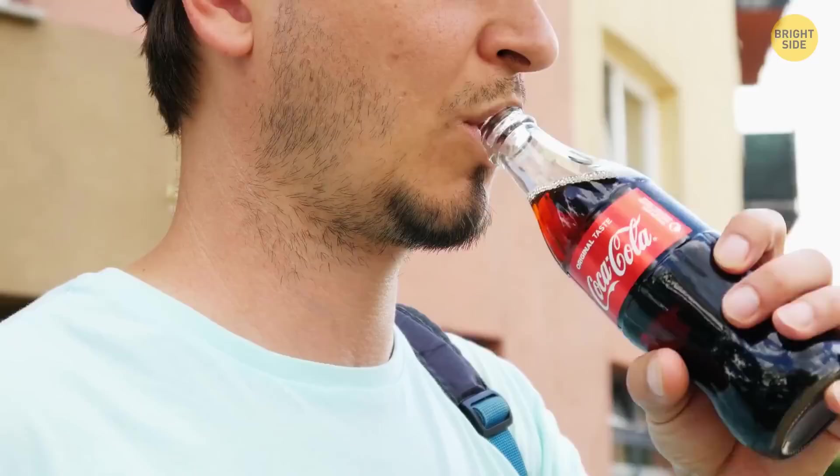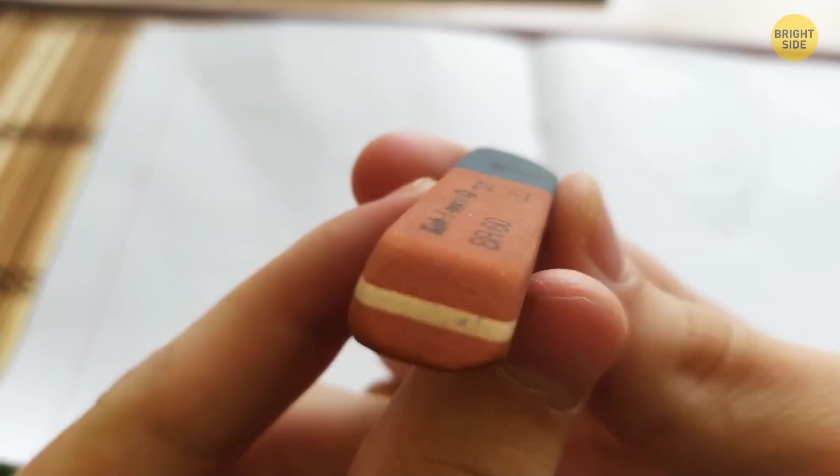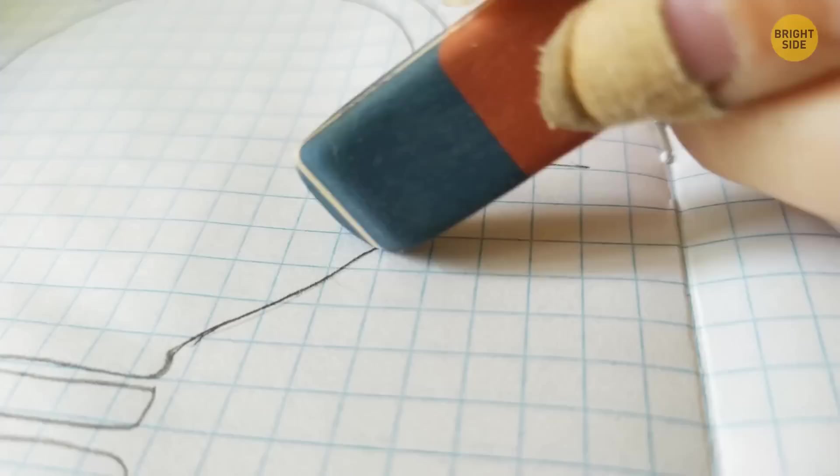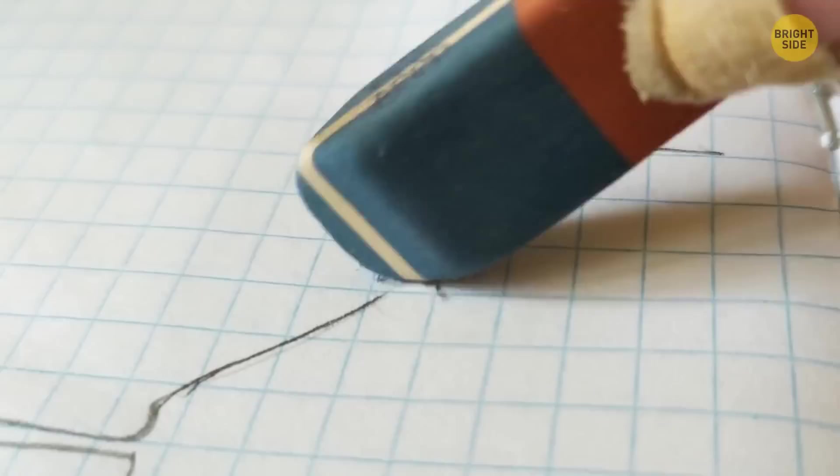If you use the blue side of your eraser to erase pen, your notebooks are probably all full of holes. The blue side's there for when you need to erase something on much thicker paper. It works on pencil and even ink, as long as the paper's thick enough.